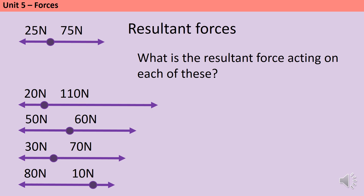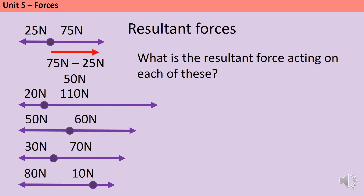We'll look at one more worked example, and then there are four questions for you to have a go at. In this worked example, we've got a force of 25 newtons to the left and 75 newtons to the right. These forces are parallel but going in opposite directions, so to find the resultant force we take one away from the other. 75 minus 25 gives a resultant force of 50 newtons to the right. Now pause the video and see if you can write down the resultant force for each of the next four questions.